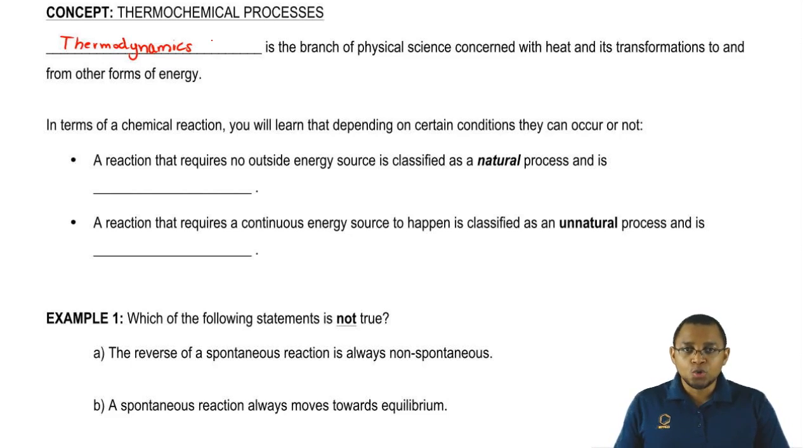The deeper into this chapter we get, we're going to learn that there are certain variables such as delta G, delta S, and even K. All of these together in some way help to determine if a reaction is spontaneous or not. A reaction that requires no outside energy source is classified as a natural process.